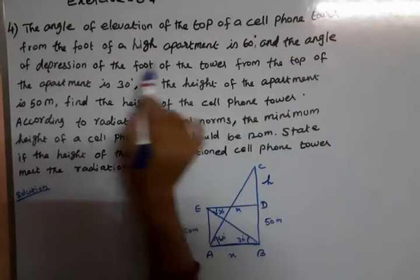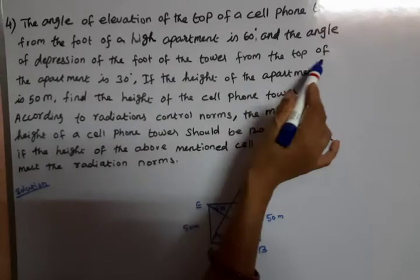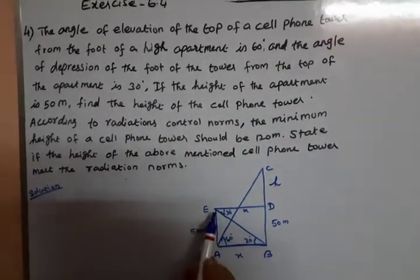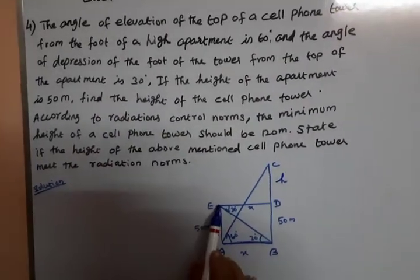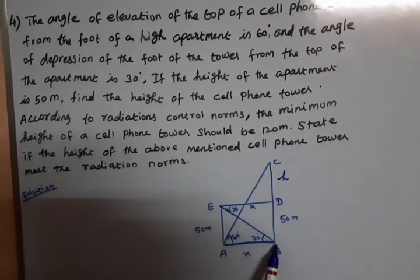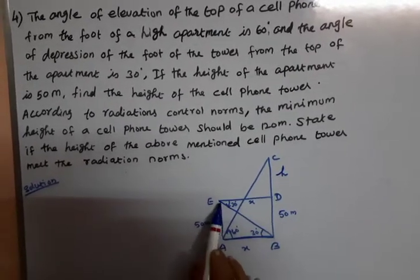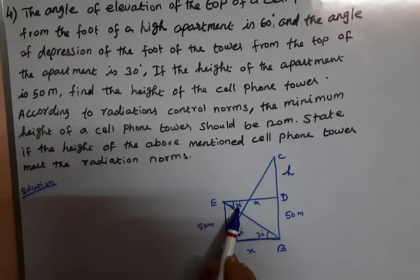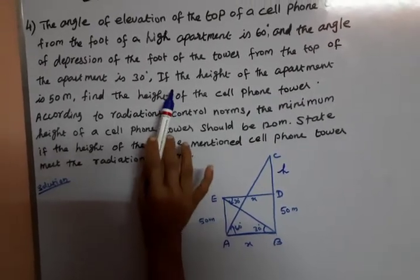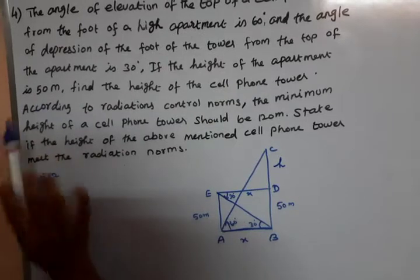And the angle of depression of the foot of the tower from the top of the apartment is 30 degrees. The height of the apartment is 50 meters.